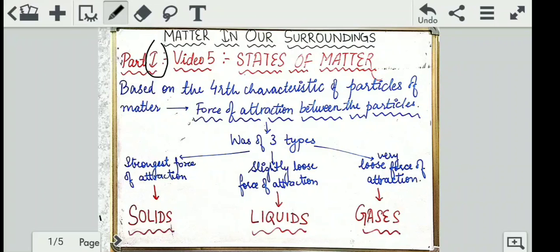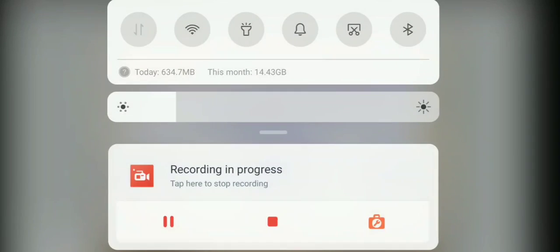As we have studied, the fourth characteristic of particles of matter is the force of attraction between the particles — how the particles are attracted to each other. This fourth property had three types: strongest force of attraction in solids, slightly loose force of attraction in liquids, and very loose force of attraction in gases. Based on this property, we have divided the states of matter into three types: solids, liquids, and gas.